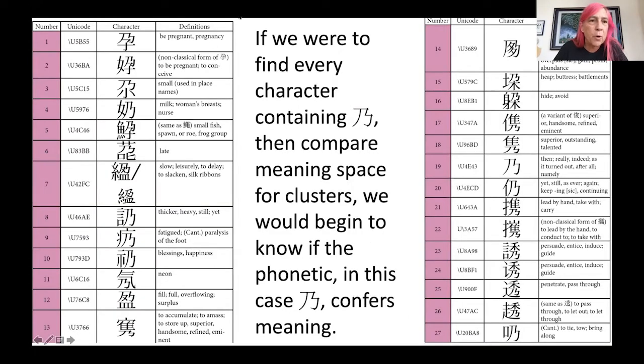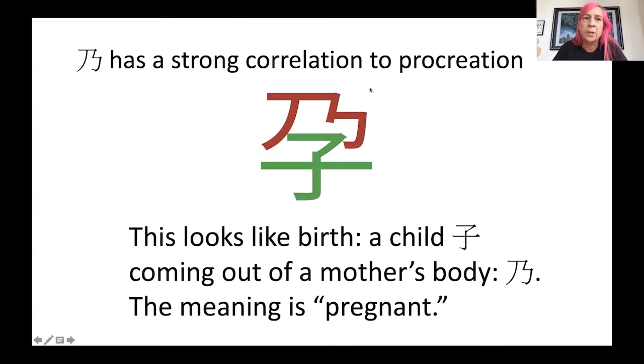You can see that there's a lot of associations with pregnancy and even things that have association, fatigue, paralysis of the foot, blessings, happiness. These all have pregnancy associations. Nigh has a strong correlation to procreation. This looks like birth. A child, zh, is coming out of the mother's body, nigh. The meaning is pregnant.